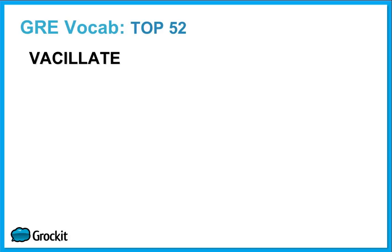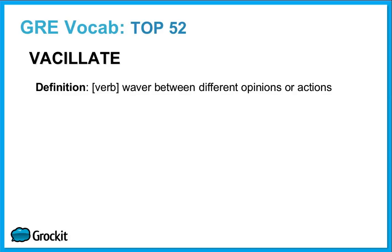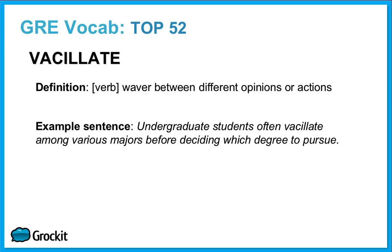Vacillate is our nineteenth word. Vacillate means to waver between different opinions or actions. Undergraduate students often vacillate among various majors before deciding which degree to pursue. Synonyms: fluctuate, sway, and oscillate.